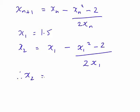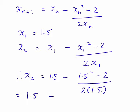Meaning x₂ will be 1.5 - (1.5² - 2)/(2 × 1.5). That becomes 1.5 minus, and this part here actually becomes 0.25 divided by 3.